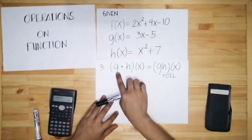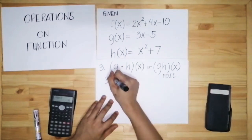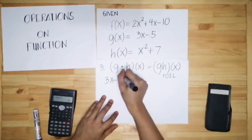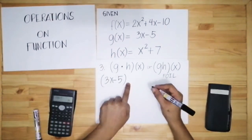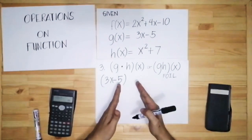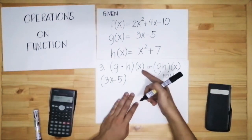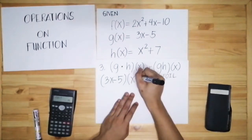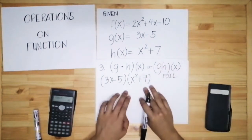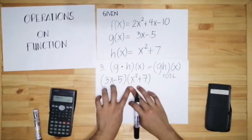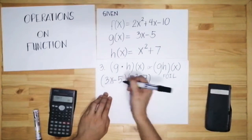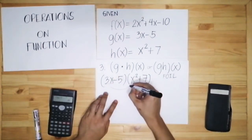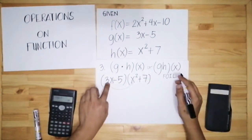To make it clearer, let's write g as 3x minus 5 in parentheses. You don't need to put a dot between the two parentheses because when two parentheses are written beside each other, that already means multiplication. So h of x is x squared plus 7. We copy g and h side by side in parentheses.